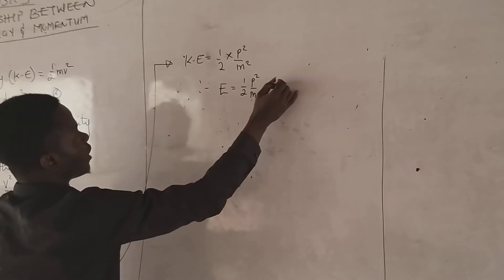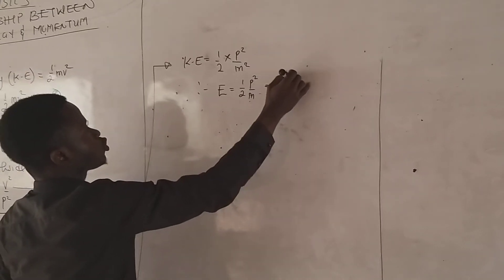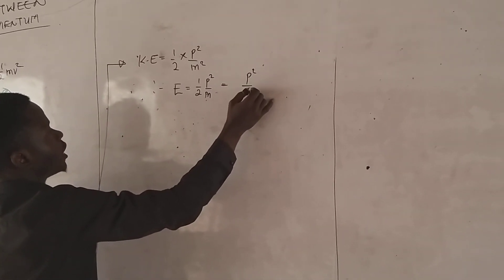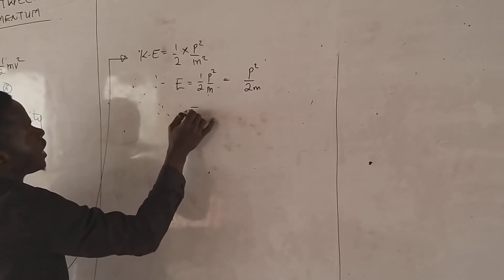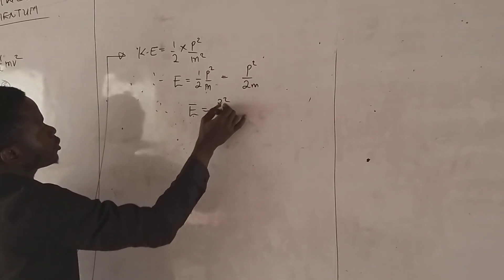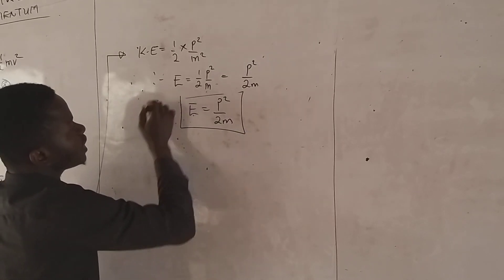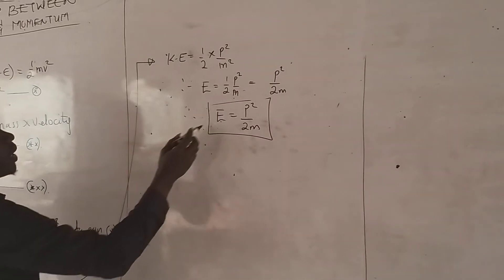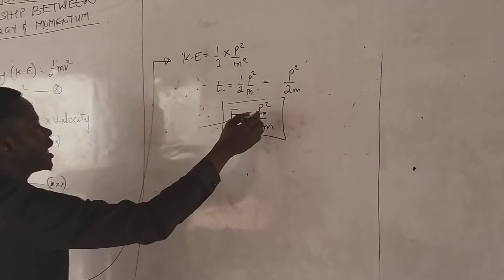All over M. So we have P squared all over 2M. Energy is equal to P squared all over 2M. From this relation, we can talk about the relationship between energy and momentum.